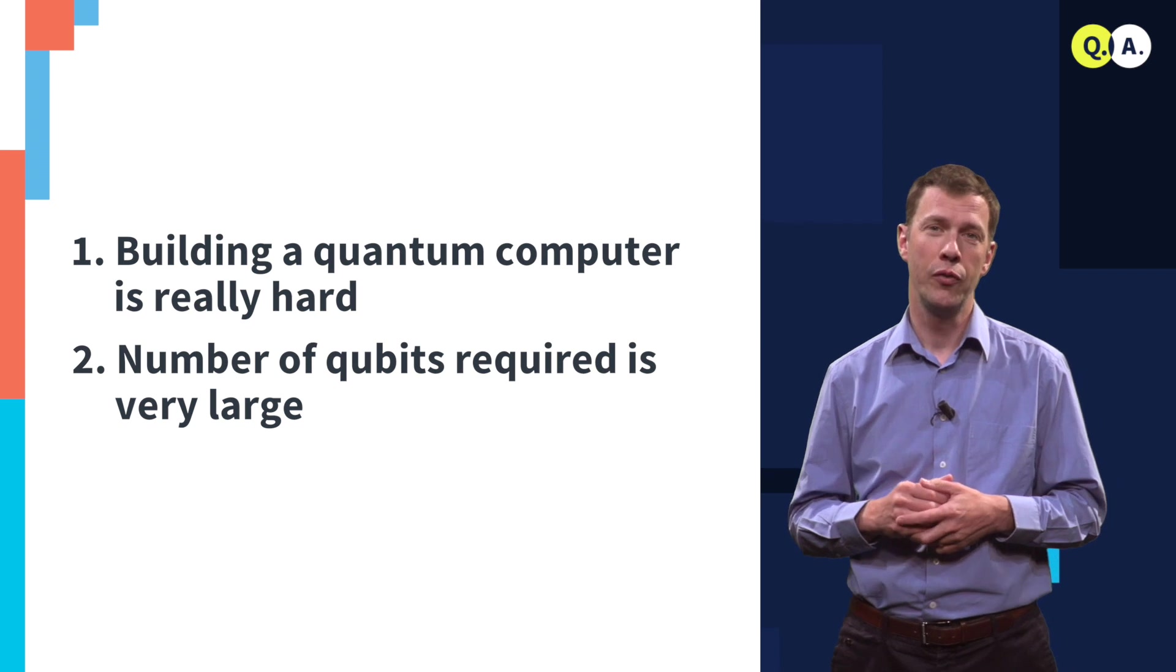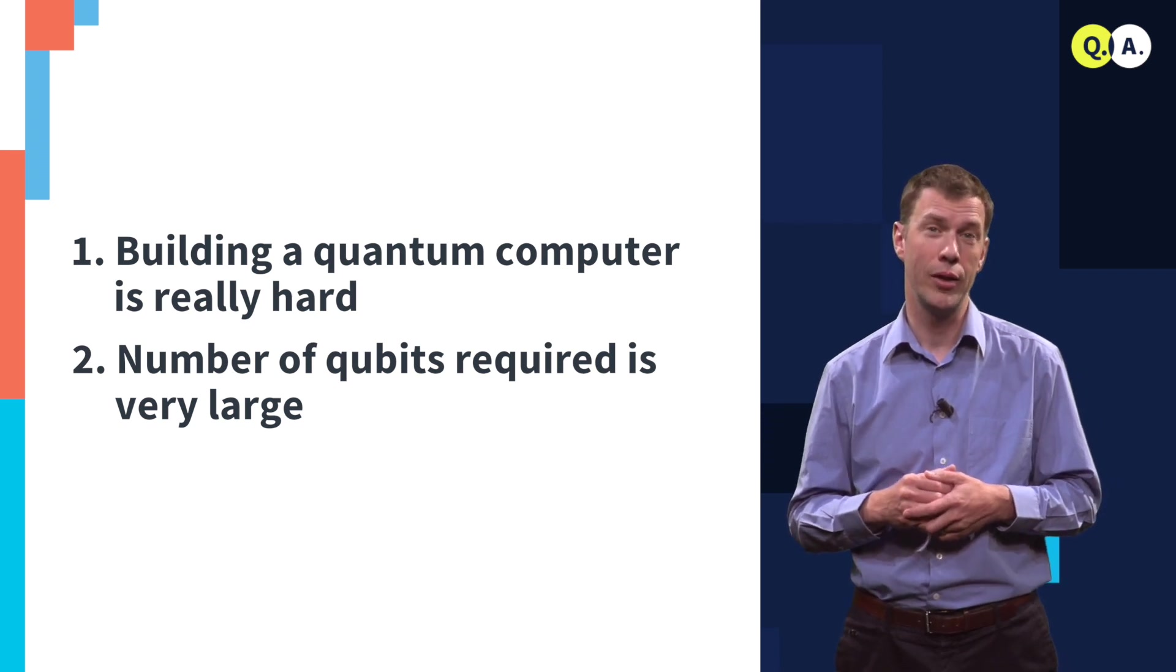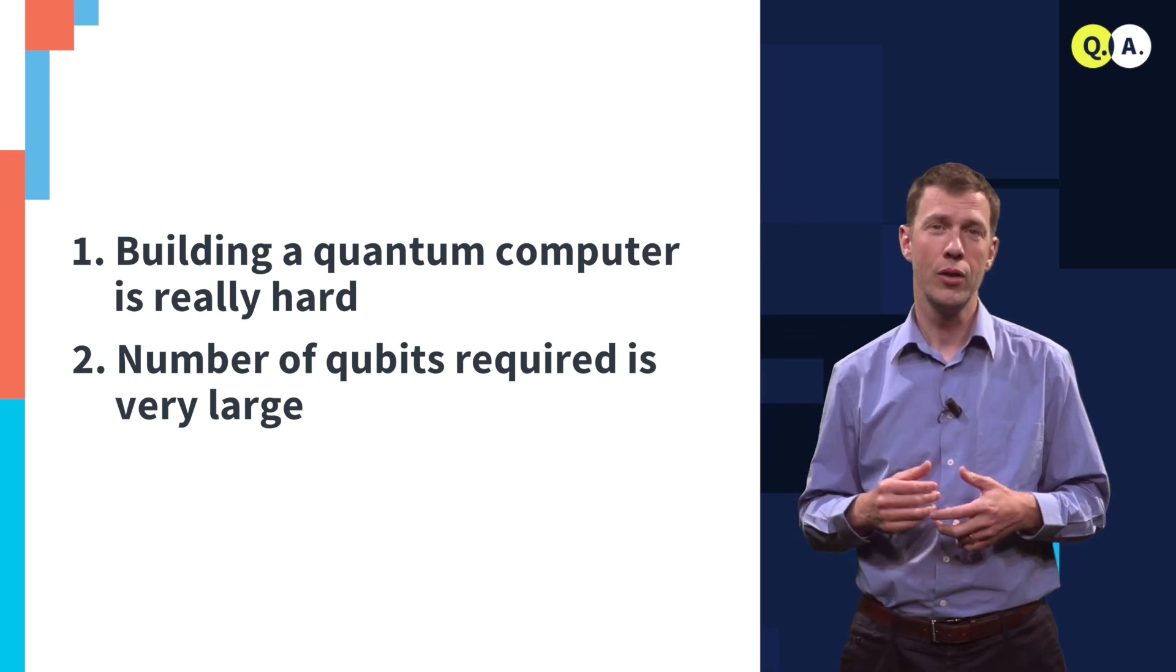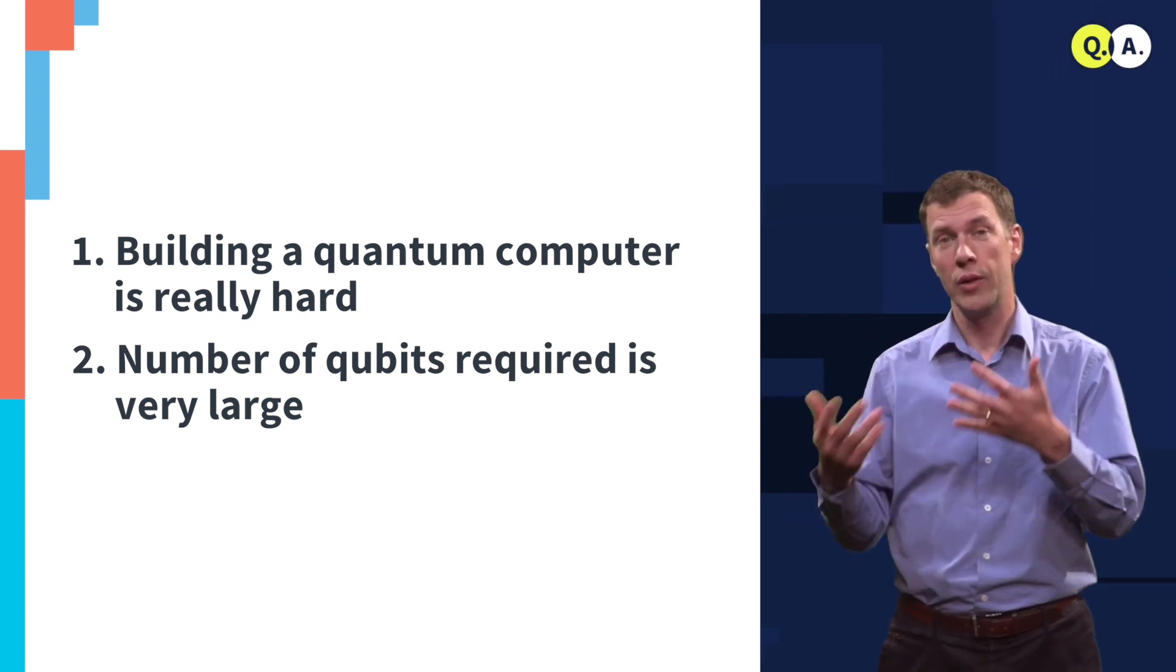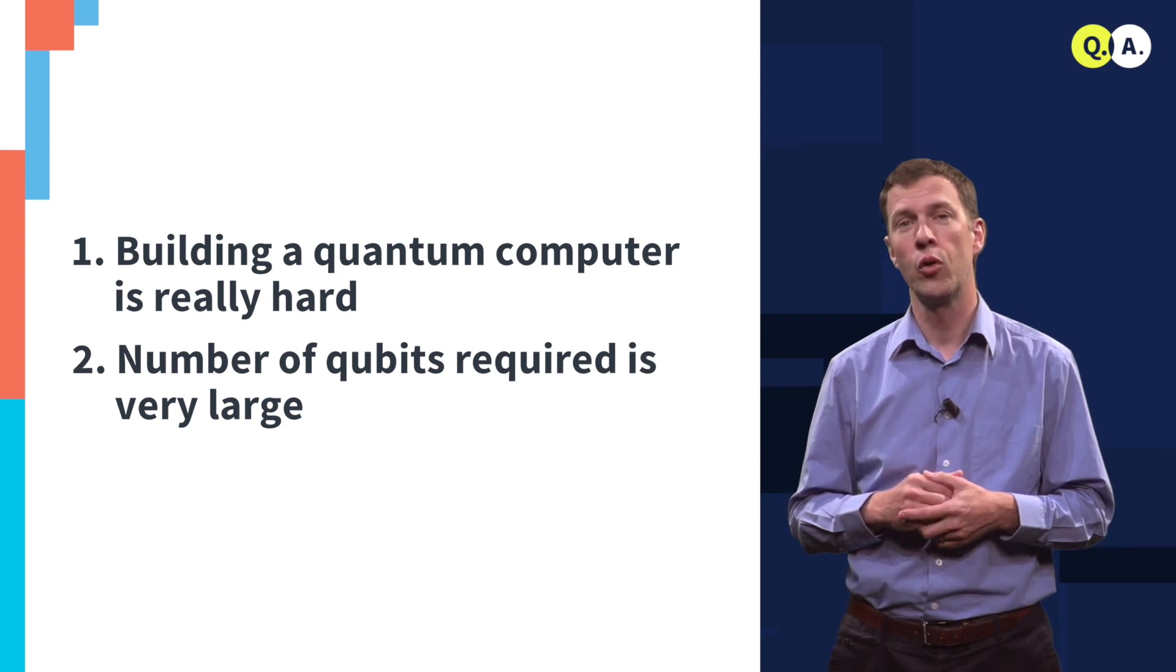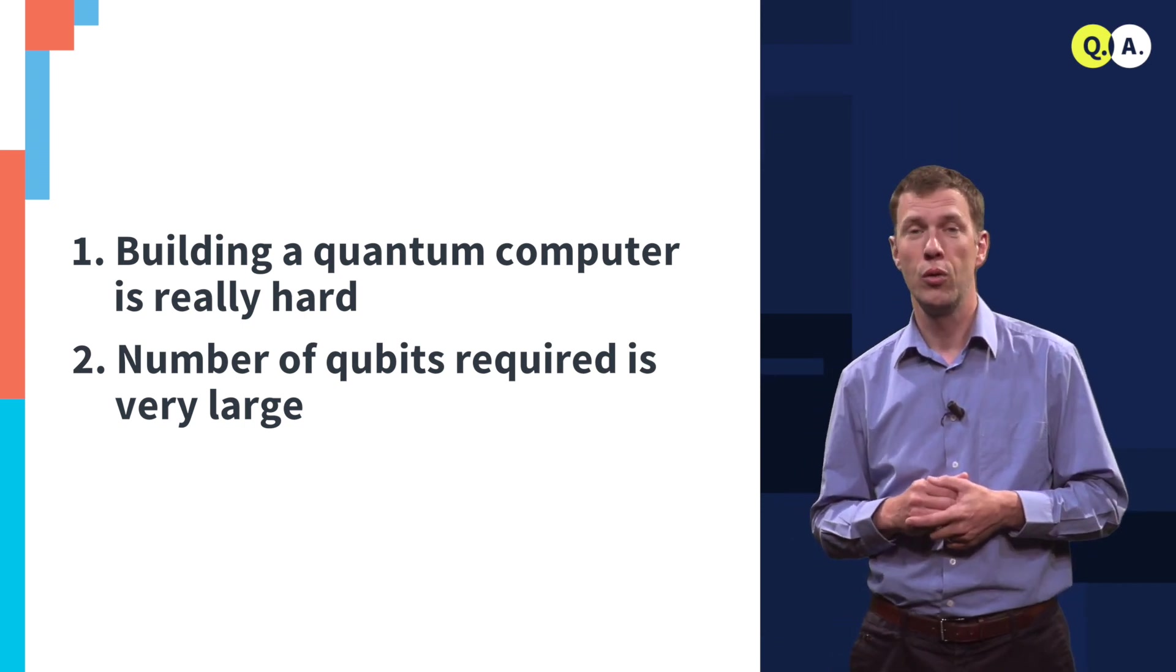To compensate for these imperfections, for these errors, we need to build in redundancy. And the redundancy is actually very significant. It's not a factor of two or three. It can be a factor of 1,000, 10,000, bringing the total number of quantum bits that we need into the many millions.